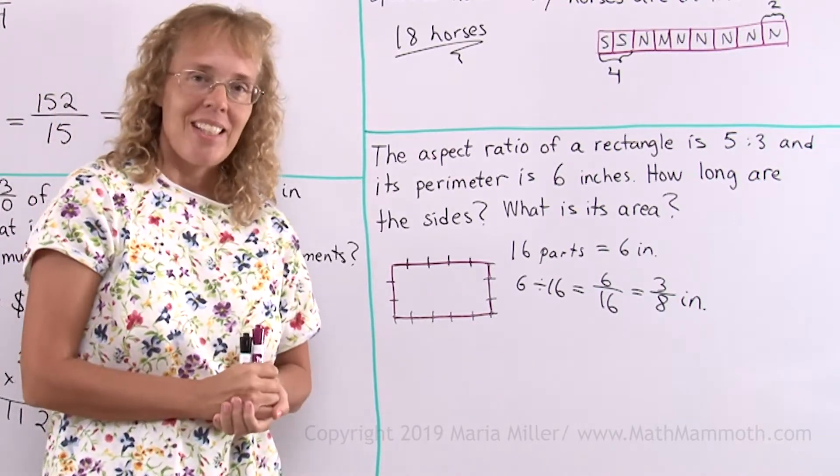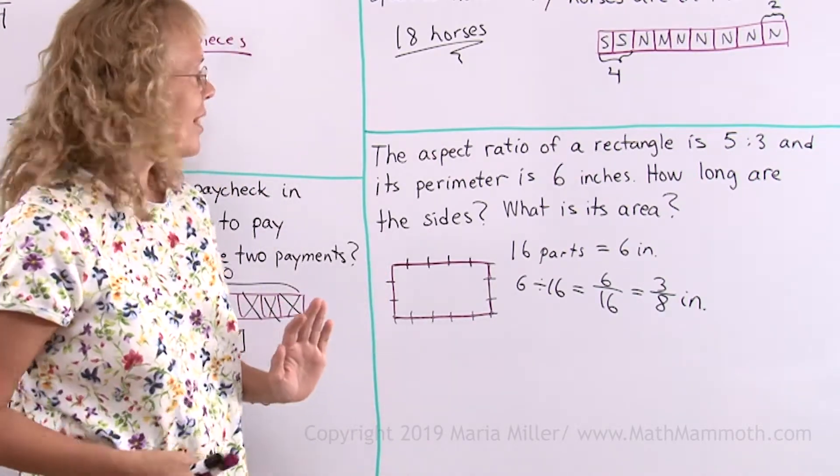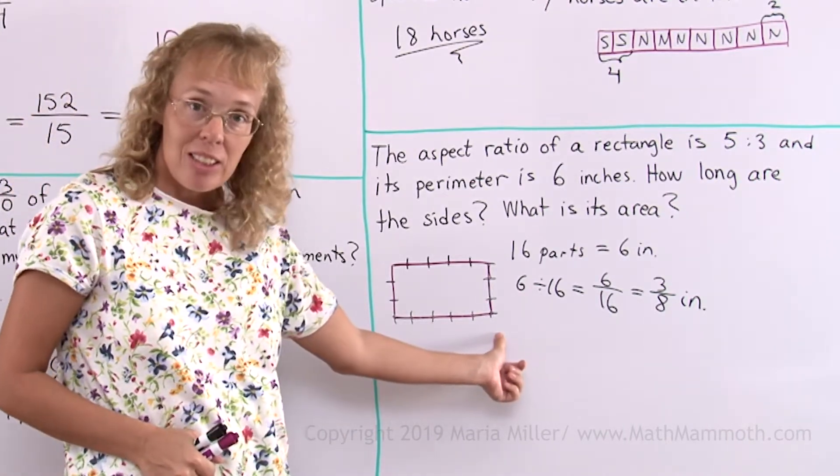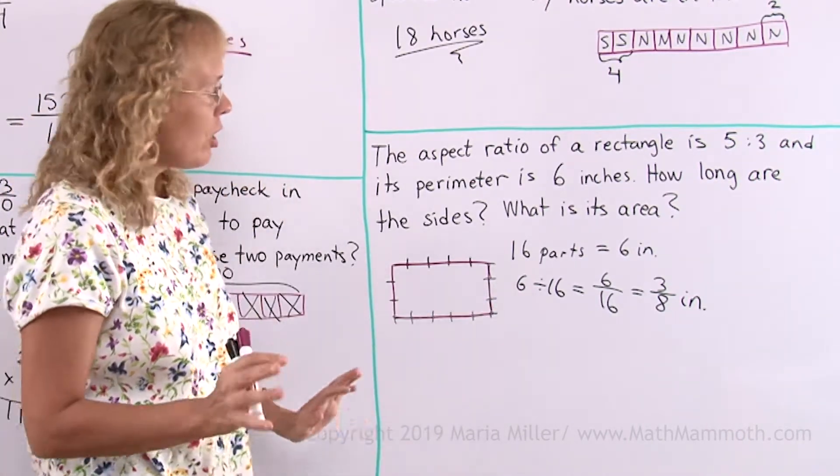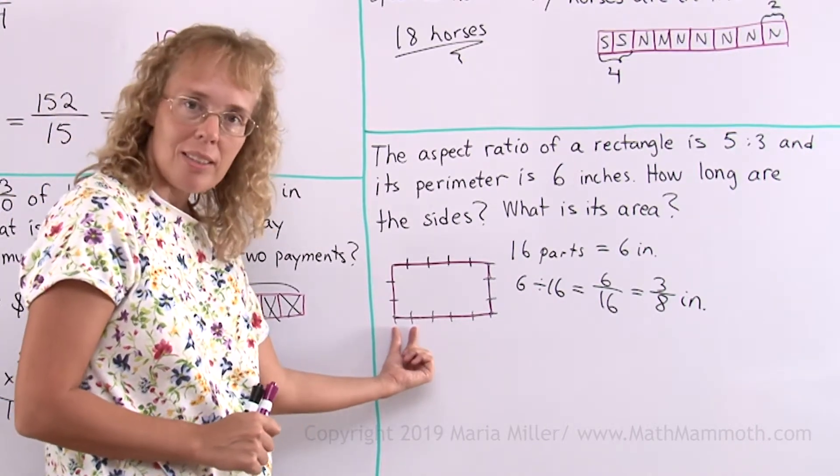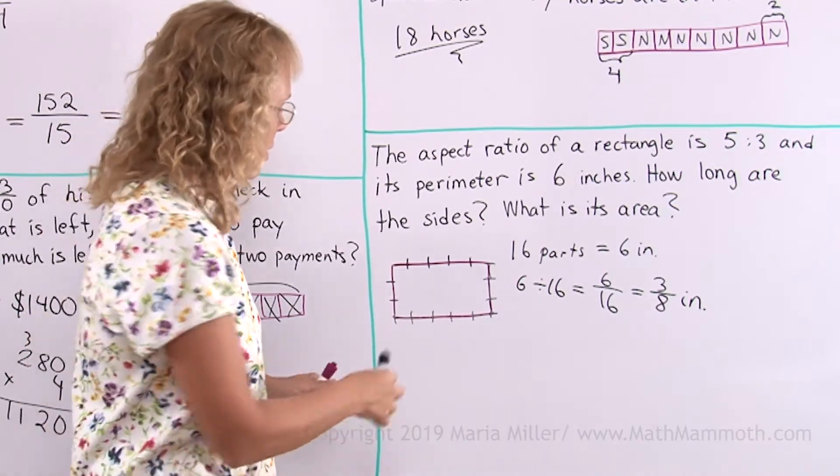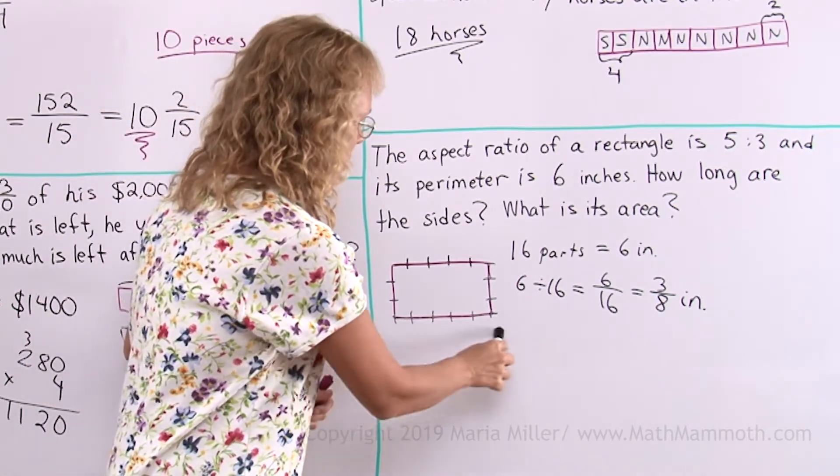So are we done? You have to always check what is the problem asking. How long are the sides? Is this side 3 eighths of an inch, or that side? No, it's not, because 3 eighths of an inch is just one of those little parts. See, we took the whole perimeter and divided by 16. So this is 3 eighths of an inch. How much is this side then?